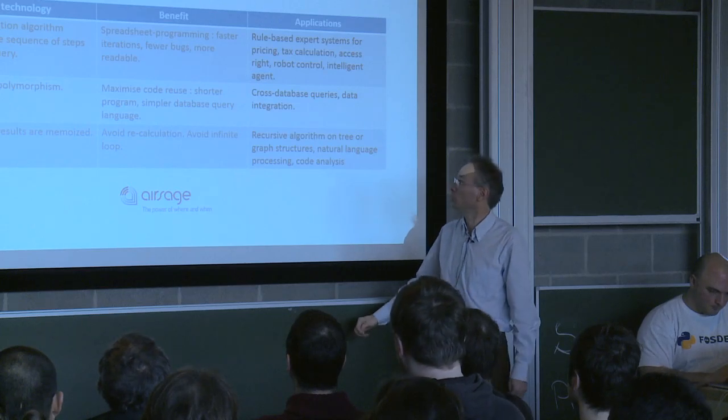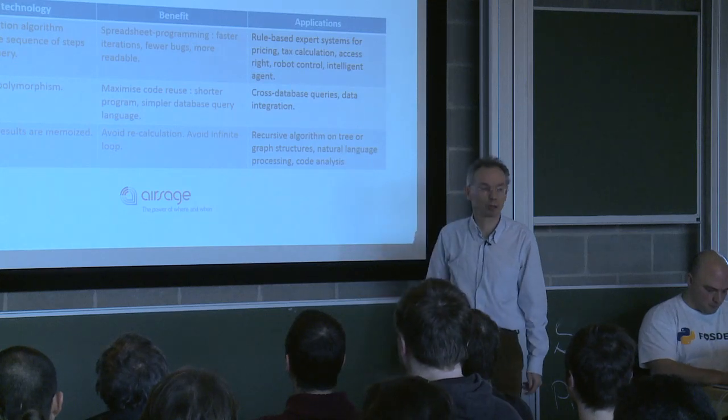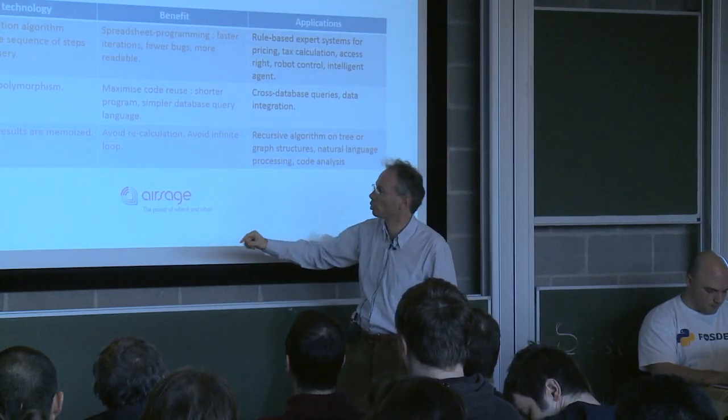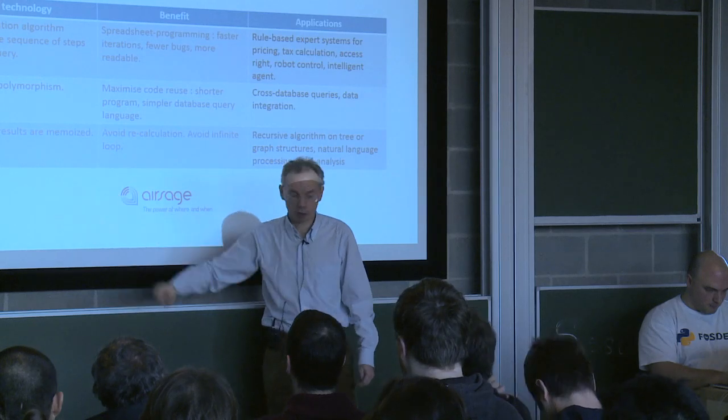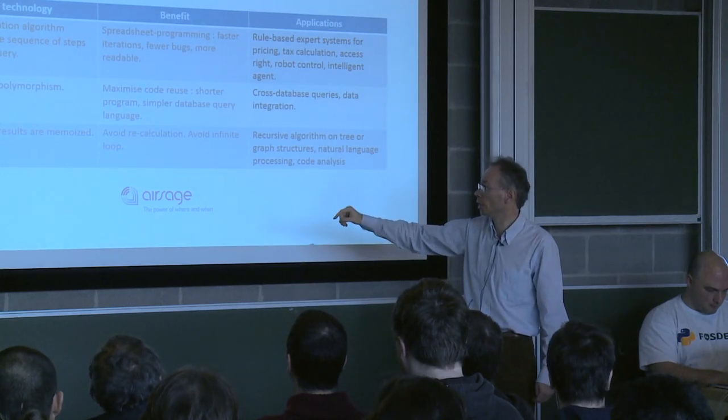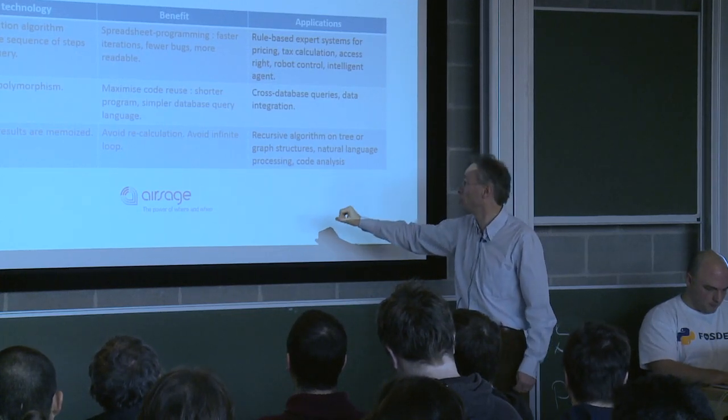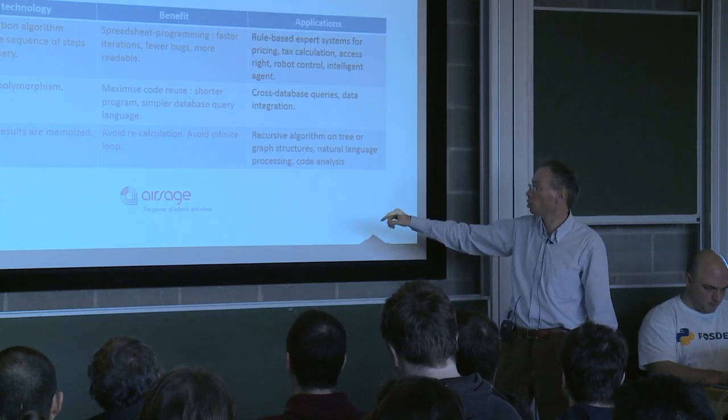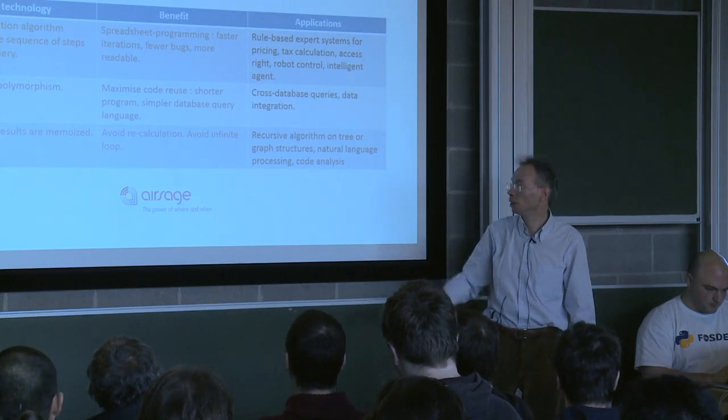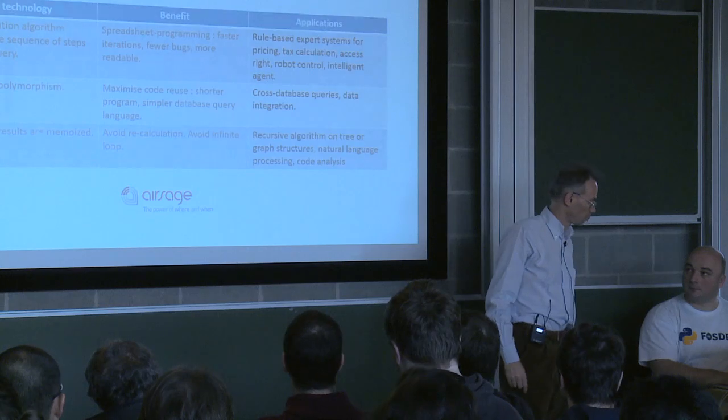Another technology is the input-output polymorphism that I mentioned, that helps maximize code reuse, and it can be used for cross database queries, for data integration, and in general it makes programming faster. And then the intermediate results are memoized, that helps in speed and infinite loop. Big applications are recursive algorithms on tree and graph structures. Code analysis may be an interesting topic to look at it, to do some static analysis of source code.